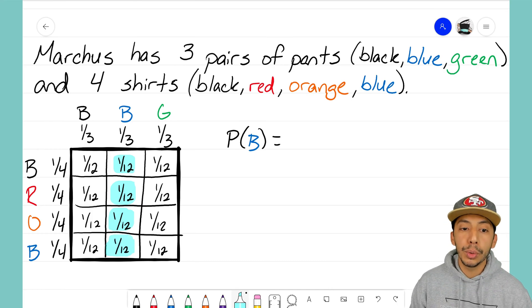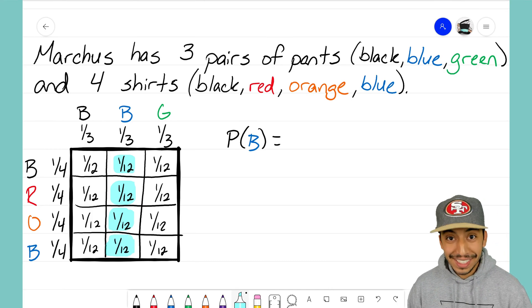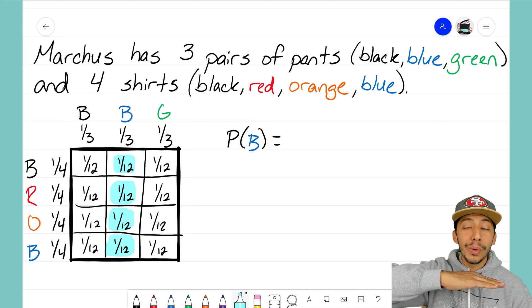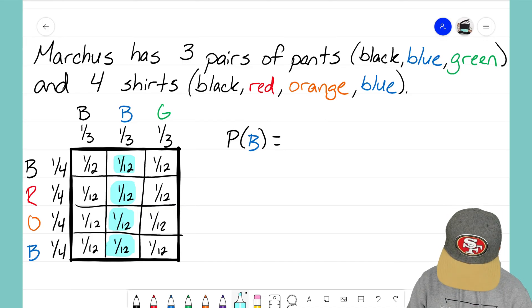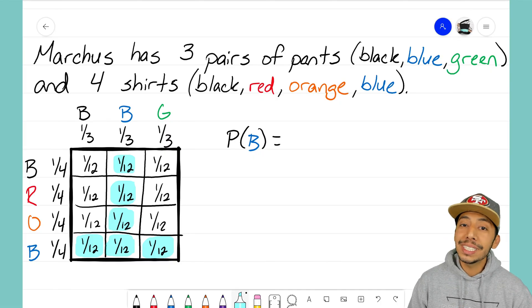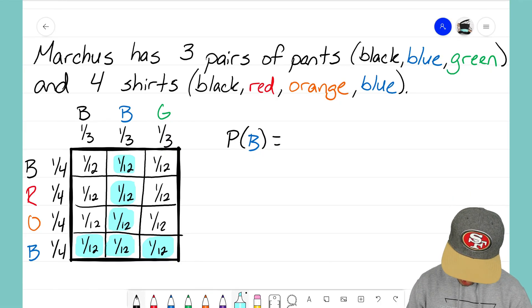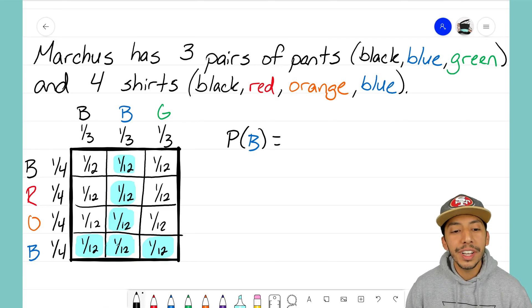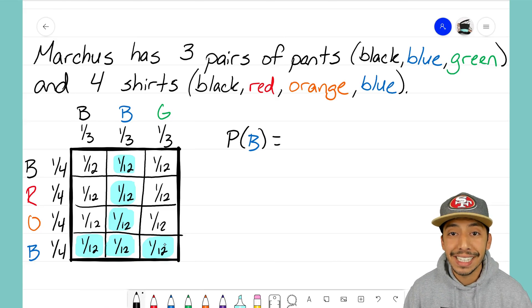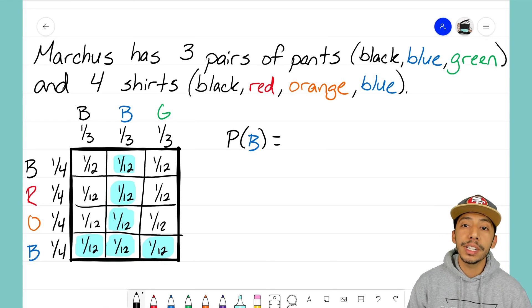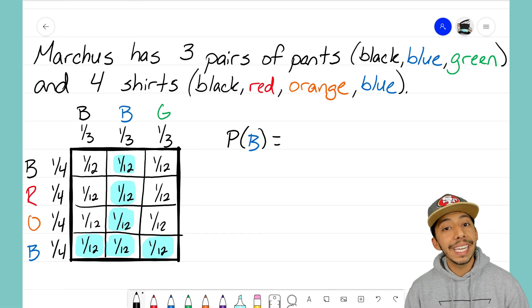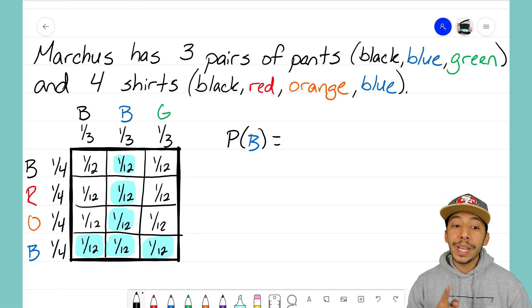Well, look at my blue pant column here. I know that each of these one twelfths is representing Marcus wearing blue pants. The same thing is going to be with that bottom row. That bottom row there represents when Marcus is wearing a blue shirt. So notice that out of all the twelve possible combinations, we have one, two, three, four, five, six different ways for Marcus to be wearing blue in his outfit.